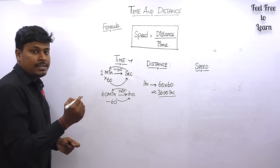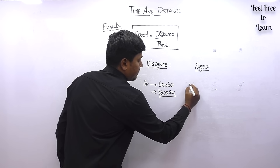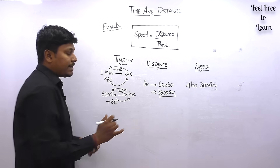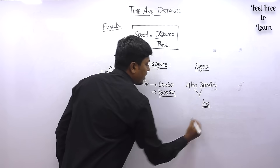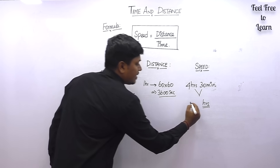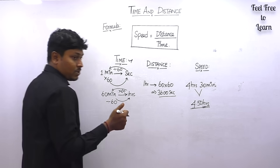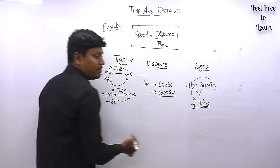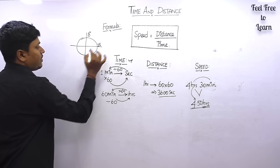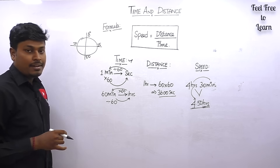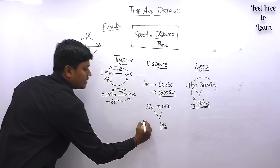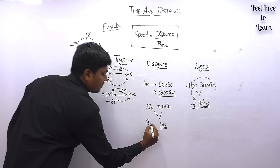Another important skill is converting mixed hours and minutes completely into hours. For example, 4 hours 30 minutes equals 4.5 hours. For easy calculation, think of a clock divided into 4 sectors: 0, 25, 50, 75, 100. So 15 minutes is 0.25, 30 minutes is 0.50, 45 minutes is 0.75. For 3 hours 15 minutes, that becomes 3.25 hours.